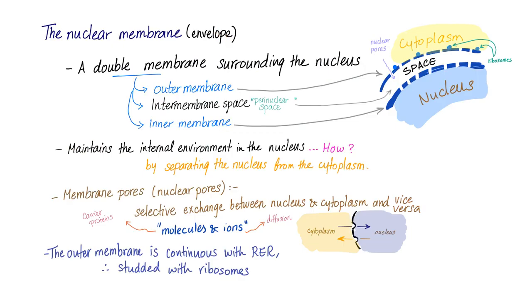The nuclear membrane is a similar concept — a double membrane made of lipid, with an outer membrane, inner membrane, and intermembrane space, also known as the perinuclear space. It has pores to allow entry and exit of some materials, and it maintains the internal environment of the nucleus by separating it from the cytoplasm. Membrane pores allow selective exchange between the nucleus and the cytoplasm. Molecules go by carrier proteins because they are big; ions go by diffusion. The outer membrane is continuous with the rough endoplasmic reticulum, which is why it is studded with ribosomes.